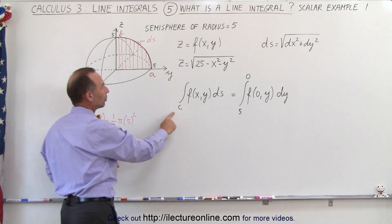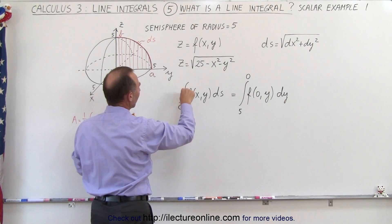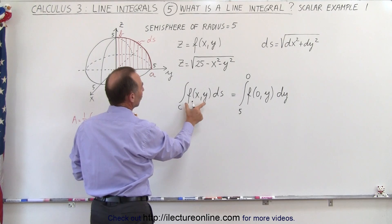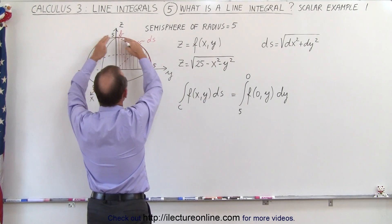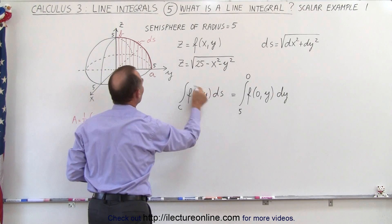So here's our line integral. We're going to integrate along the curve from a to b. So we can go ahead and put a to b down, or that's what that curve means. We're going to integrate the function, which is the equation of that semi-sphere, multiplied times ds,